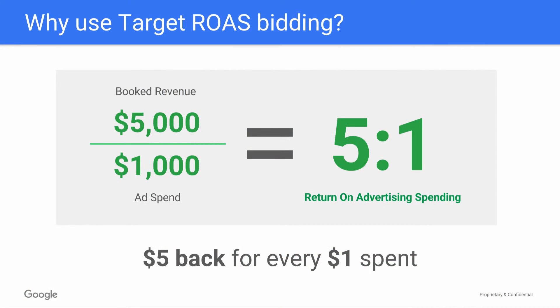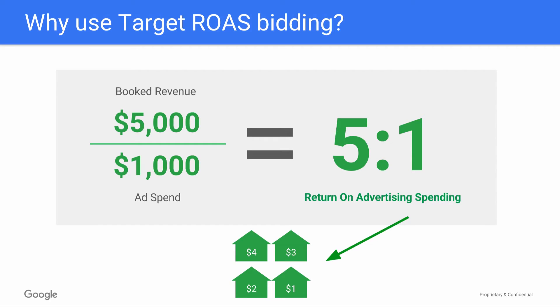This video covers the Target Return on Ad Spend, or Target ROAS, bidding option for Google Hotel Ads. Like its name implies, Target ROAS helps you manage your hotel ads in terms of the return on ad spend you'd like to achieve. You start by specifying a Target ROAS goal — for instance, 500%, or $5 back for every $1 you spend. Then, Target ROAS optimizes your bids to help you hit that goal. Target ROAS is great if you want an automated way to manage your hotel ads bidding.